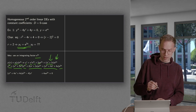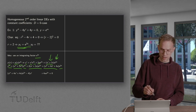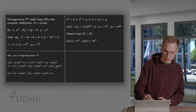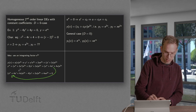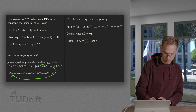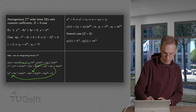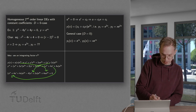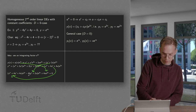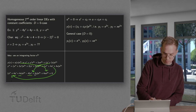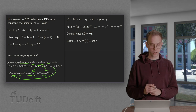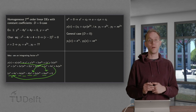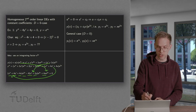We plug everything into the differential equation — y'', y', and y. Cleaning up the mess, we see that 4u and -4u cancel, -8u and +4u cancel, and the 4u' terms cancel. The only thing left is u''·e^(2x) = 0. Since the exponential is never zero, we get u'' = 0.